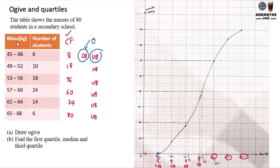Your upper boundary here, which is 48.5, this one, is your cumulative of 8 here. So this is 8. And then upper boundary of this class, which is 52.5, is 18. So find 18, 36, 60, and 74, and 80.